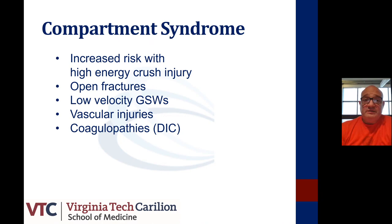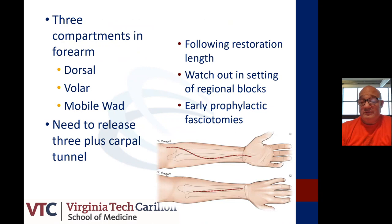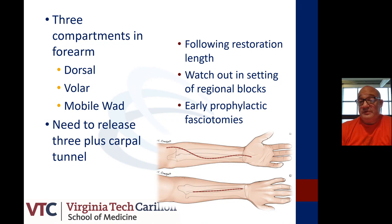Compartment syndrome has increased risk with high-energy mechanisms, open fractures, low-velocity gunshot wounds, vascular injuries, and coagulopathies — including some COVID patients with coagulopathy. It requires high clinical suspicion. Patients will present with pain out of proportion, pain with passive stretch, tense compartments, and paresthesias — this is a clinical diagnosis. There are three compartments in the forearm: the dorsal, volar, and the mobile wad. You need to address all three, and a carpal tunnel release is also recommended. Be careful with regional blocks because they can mask compartment syndrome. Consider early prophylactic fasciotomies when treating by open reduction and fixation, performing releases within the same incisions at the time of surgery.